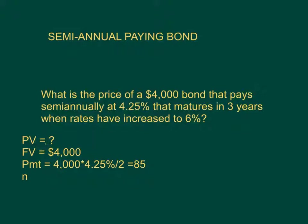My period is going to be 3 times 2, or 6 semi-annual periods — 3 years, 2 semi-annual periods per year, that's 6 semi-annual periods. My rate is going to be 6% per year, but since I'm doing semi-annual, you divide by 2 and put it in as 3%. So I am trying to figure out present value. My rate is 3% because it's semi-annual. My period is 6 semi-annual periods. My payment is $4,000 times 4.25% divided by 2, or $85. My future value is $4,000. My answer, if you do it right, is $3,810.40.